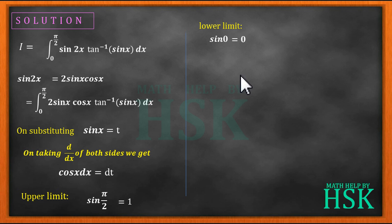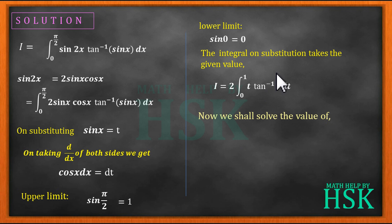On substitution we get the value of i is 2 into integration of t into tan inverse of t dt from the limit 0 to 1. To make the simplification easier we shall not solve the integral with limits. We shall solve the value of integration of t into tan inverse of t dt, and after solving it we shall apply the limits.